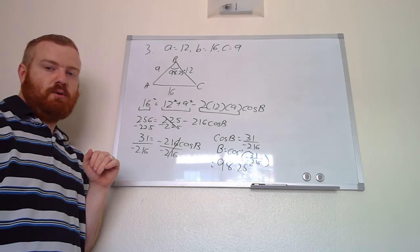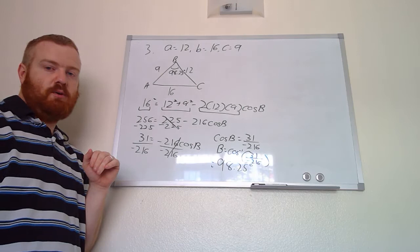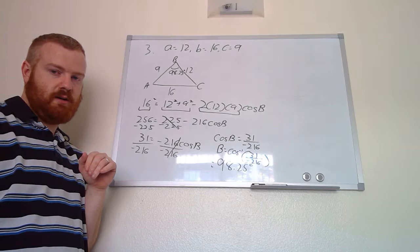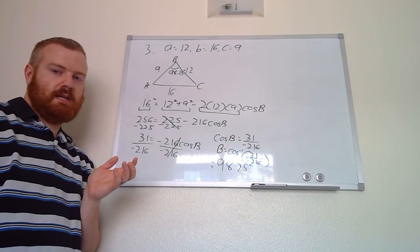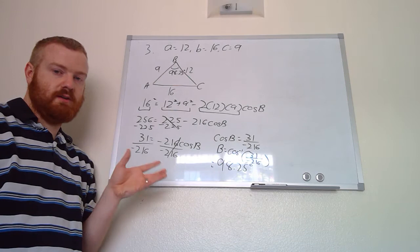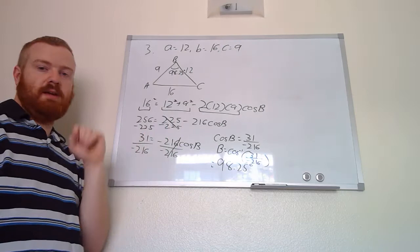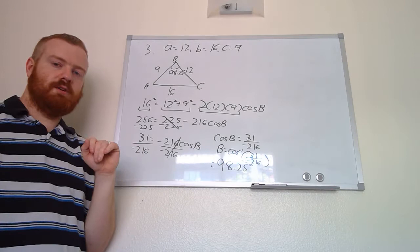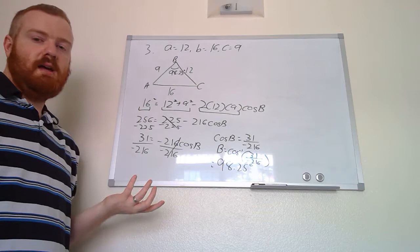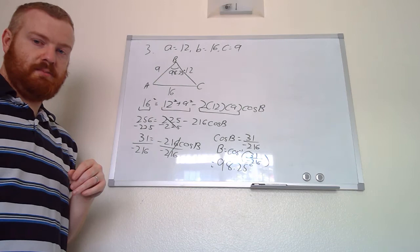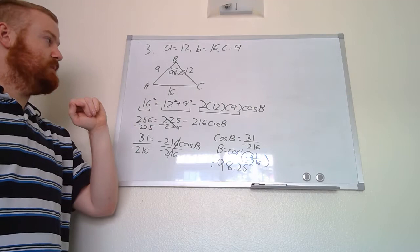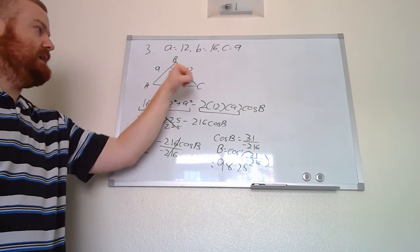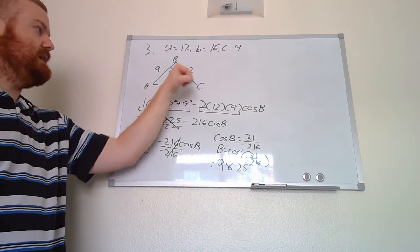Now that we've solved for the biggest angle first, we can switch over to the Law of Sines to finish solving, since it's quicker. If you don't solve for the biggest angle first, it creates an ambiguous case where two different triangles could work mathematically. Solving for the biggest angle first avoids that ambiguity, allowing us to switch to the Law of Sines. Going alphabetically, we want angle A using side a = 12, with angle B and side b as our known pair.